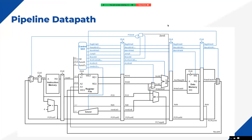Before going further, let's have a quick recap of the pipeline datapath. As I told you in the first lecture, it is the same as the single cycle part but we have added some registers which converts it into the pipeline version. We divided the whole architecture into five different stages: the first was the fetch stage, the second was the decode stage, and the third was the execution stage.